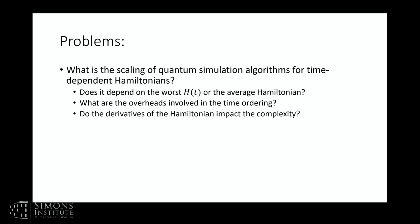A couple of problems existed about two years back. If we're simulating a time-dependent Hamiltonian, does the scaling depend on average-case properties or worst-case properties? It could happen that at some point the Hamiltonian becomes ludicrously difficult to simulate and then trivial afterward — like an impulsive interaction where there's zero interaction most of the time and then an incredibly strong interaction suddenly. In that case, paying full cost when systems aren't interacting would be incredibly wasteful, and it was unknown whether simulation methods scaling with the average rather than worst-case Hamiltonian value were even possible.